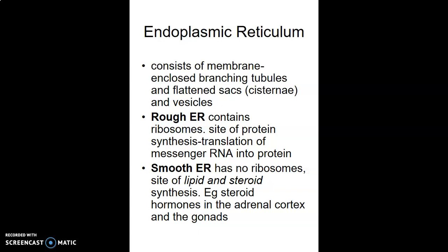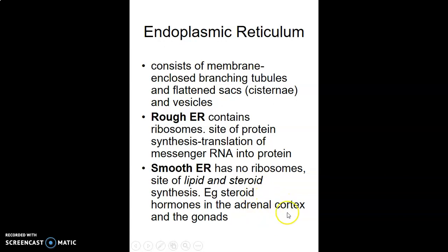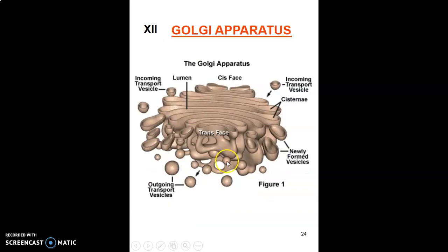The smooth endoplasmic reticulum has no ribosomes and is usually a site of lipid and steroid synthesis. Structures like the gonads — ovaries, testes — and the adrenal cortex synthesize steroids, so the cells in these organs will have abundant smooth endoplasmic reticulum.